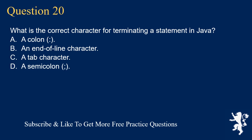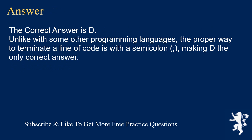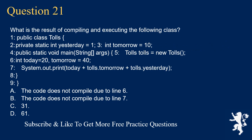Question 20: What is the correct character for terminating a statement in Java? A) colon, B) an end-of-line character, C) a tab character, D) a semicolon. The correct answer is D. Unlike some other programming languages, the proper way to terminate a line of code is with a semicolon, making D the only correct answer.